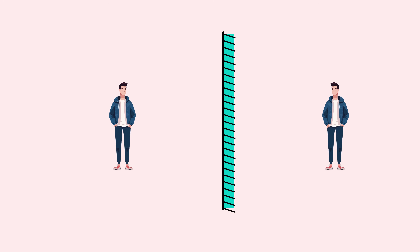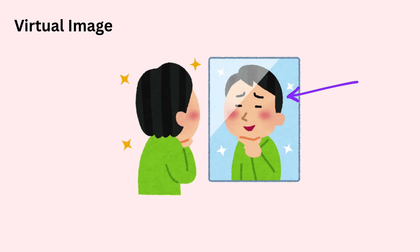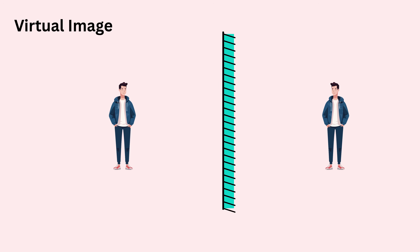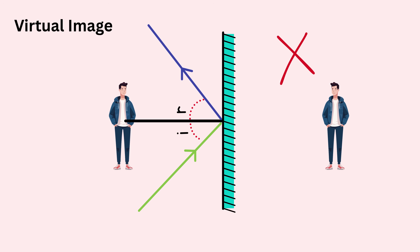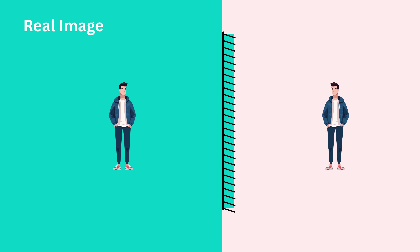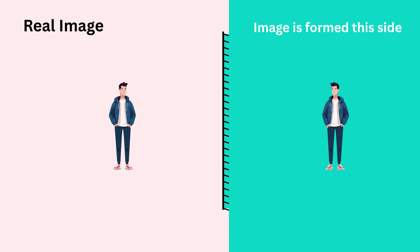A virtual image is one that you can see in the mirror but cannot touch or catch on a screen. In the case of a plane mirror, the image looks like it's behind the mirror, but no light actually goes there — it's just a clever trick of reflection. If the image is formed on the reflective side of the mirror, we call it a real image; if it forms on the hard protective layer side, we call it a virtual image.